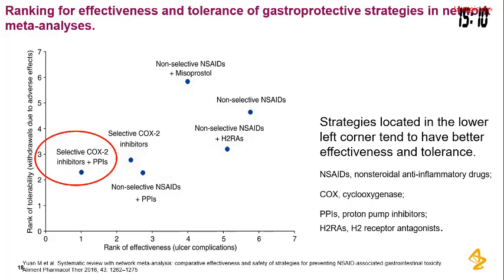The best strategy is to use a selective COX-2 inhibitor plus PPI — this is the most effective for reducing gastric damage and side effects. After that comes the selective COX-2 inhibitor alone, then the non-selective COX inhibitor plus PPI. The first choice remains COX-2 inhibitor plus PPI as the most effective for gastric protection.